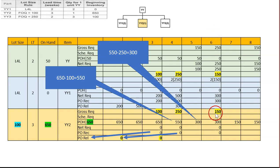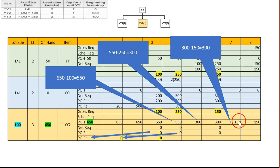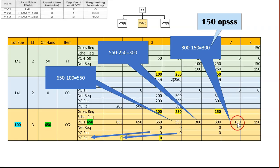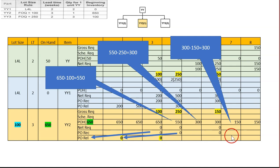Week five has no gross requirement, so we carry 300 on-hand to week six. At week six, gross requirement is 150. We have 300 on-hand, so 300 minus 150 leaves 150 remaining. No purchase is needed. The PO release of zero is placed three weeks back at week three. The remaining 150 on-hand carries to weeks seven and eight. YY2 MRP is now complete.